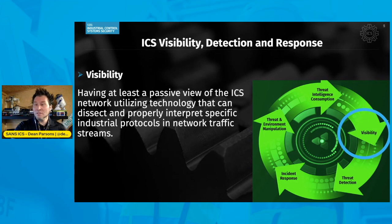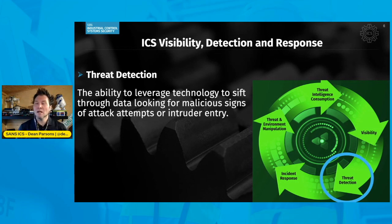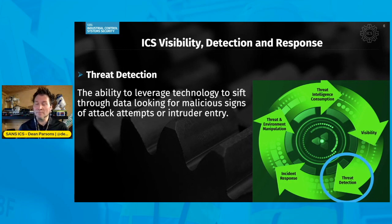With network visibility in place and threat intelligence coupled with it, we can then leverage that to go to the threat detection part of active cyber defense. With those things in place, threat detection is much easier. We then have the ability to use ICS-aware technology that allows us to sift through control system network data, looking for signs of threats in the environment, and also looking for signs of impact that could affect the safety and reliability of operations and engineering systems.